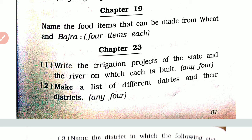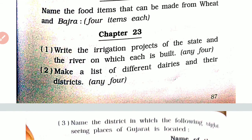Make a list of different dairies and their districts. Amul Dairy — Anand. Rut Sakar Dairy — Mehsana. Banas Dairy — Palanpur, Banaskantha. Sabar Dairy — Himmatnagar, Sabarkantha. Sumul Dairy — Surat. Vadodara Dairy — Vadodara. Madar Dairy — Gandhinagar.